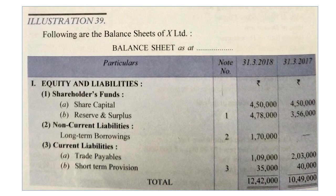Now move on to Illustration 39. Following are the balance sheets of Acts Limited for two years. Under equity and liabilities — share capital is the same in both years, meaning neither issue nor redemption occurred. Reserves and surplus have increased, showing profits have been earned. Under non-current liabilities — long-term borrowings: in 2017 there was no loan, but in 2018 a loan of rupees 1,70,000 has been taken.